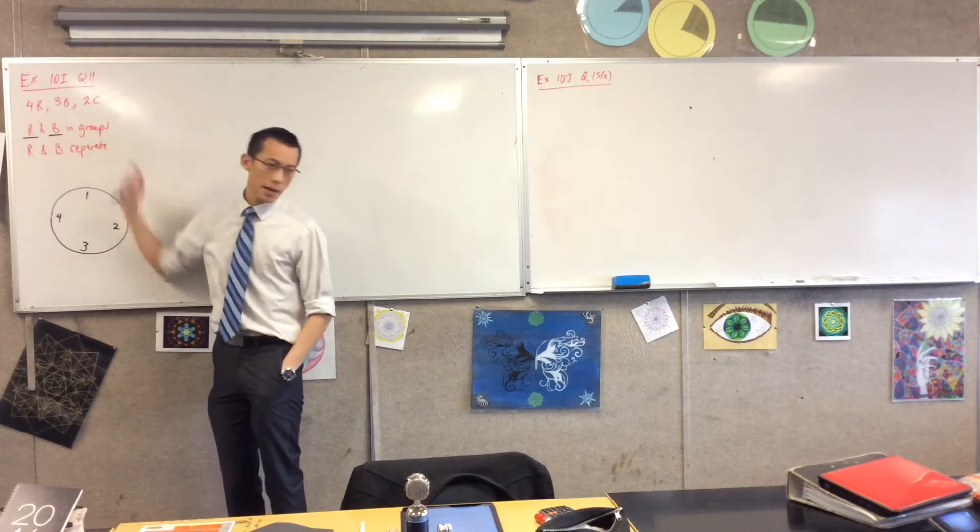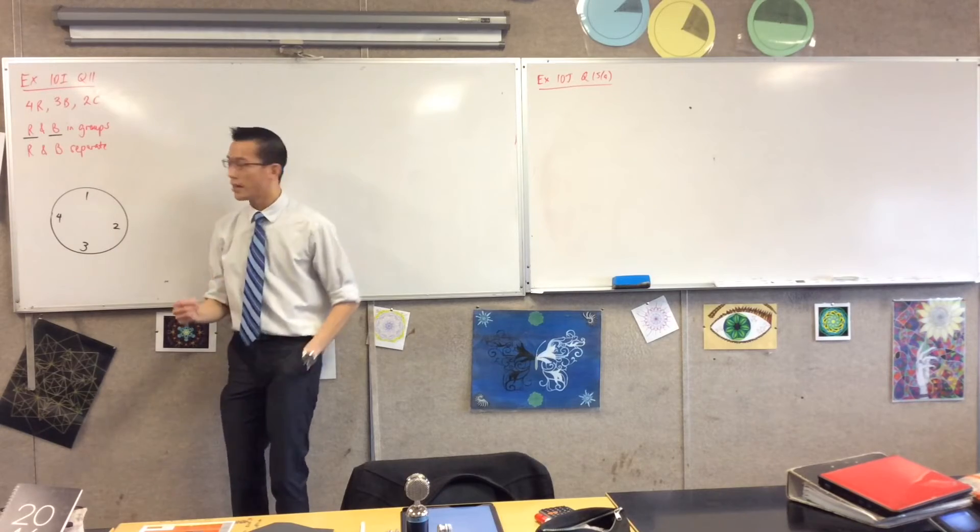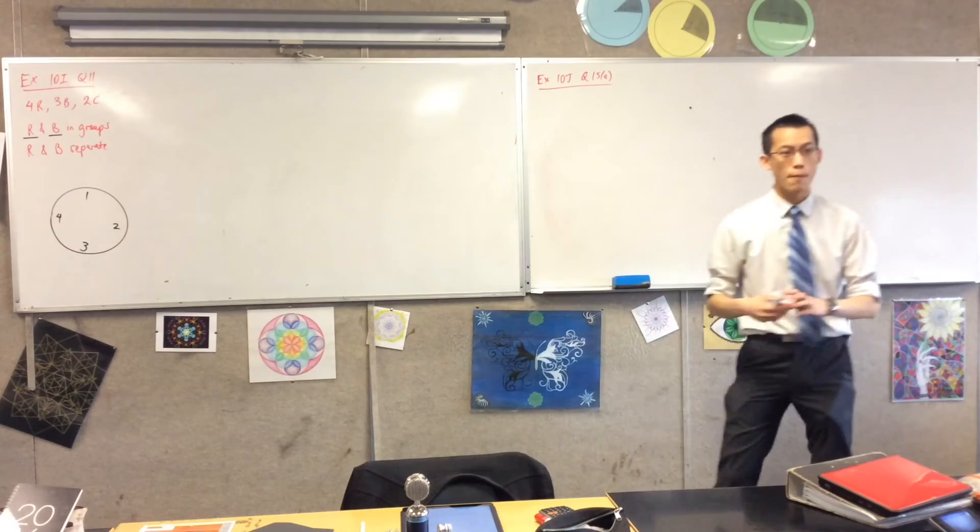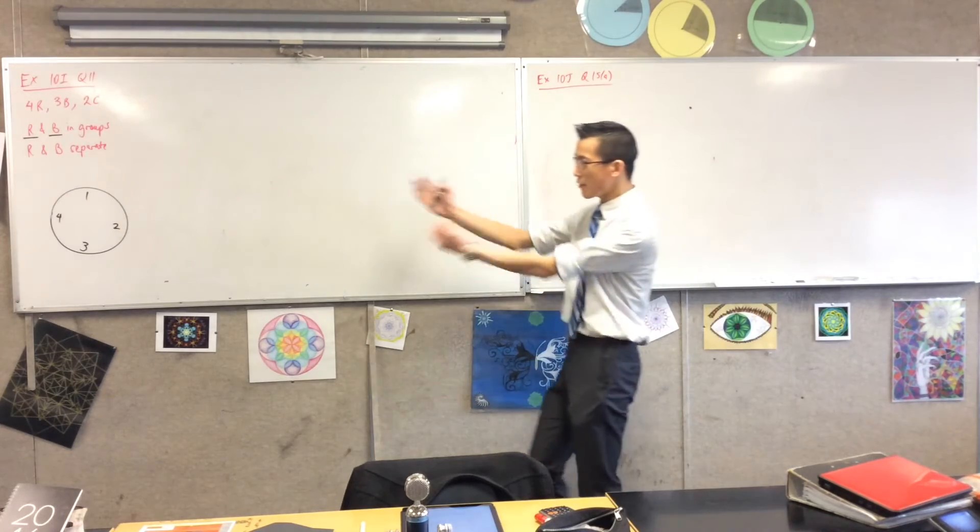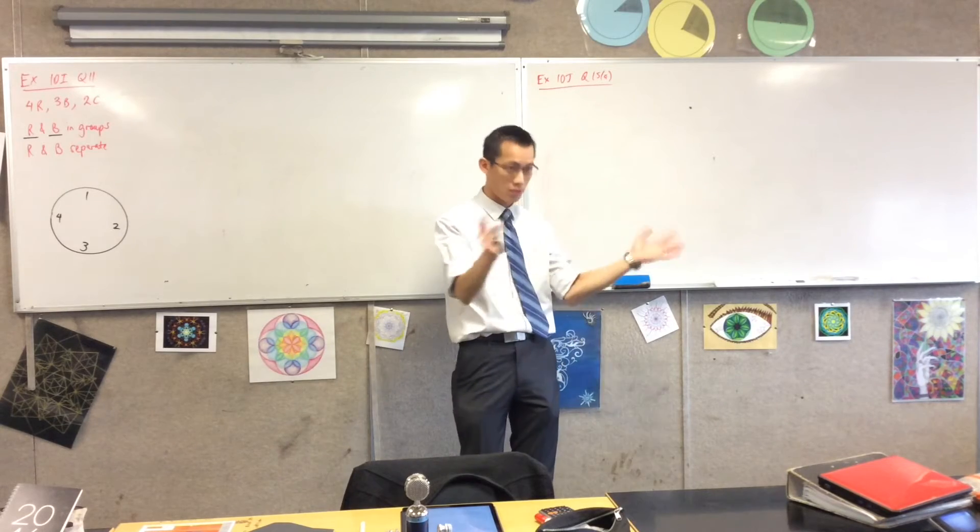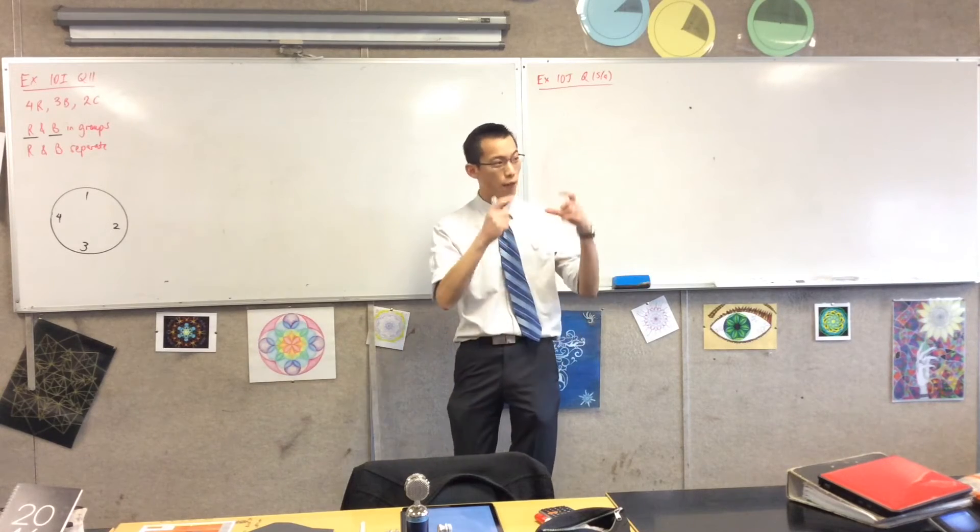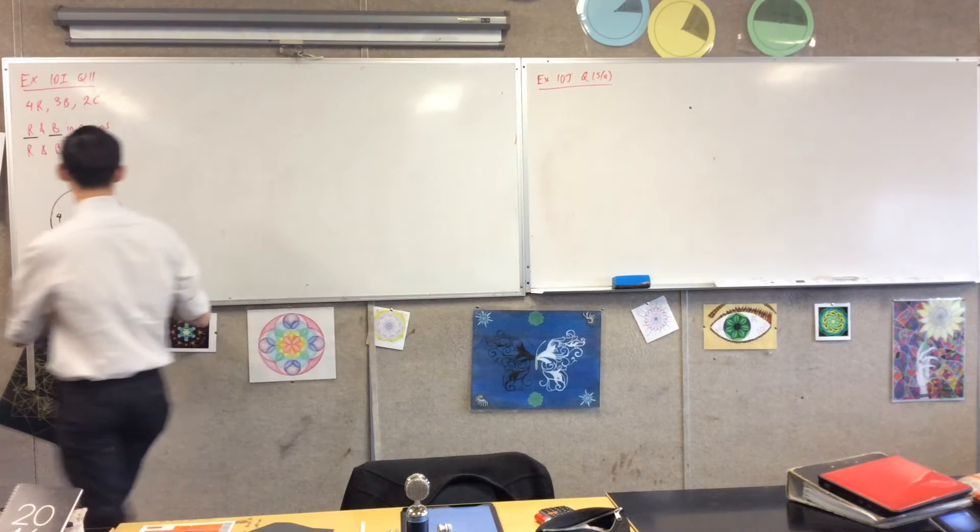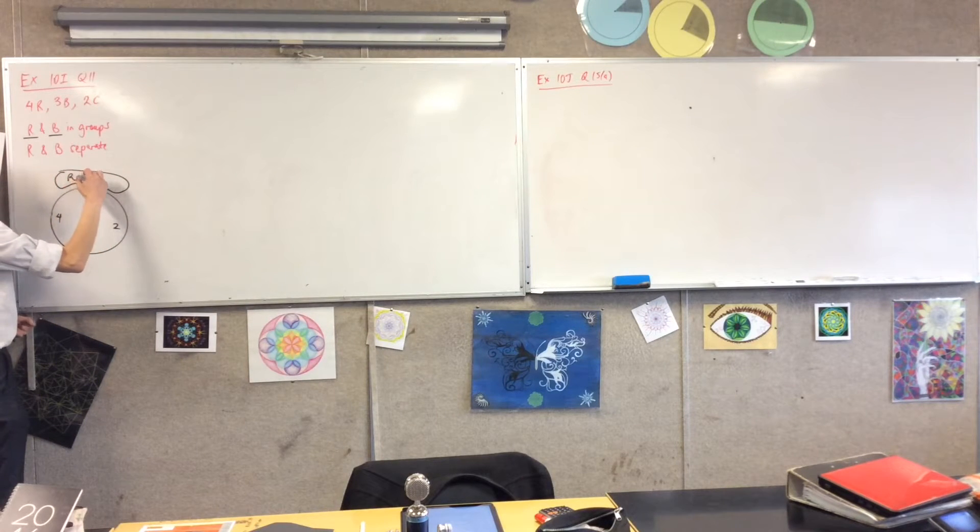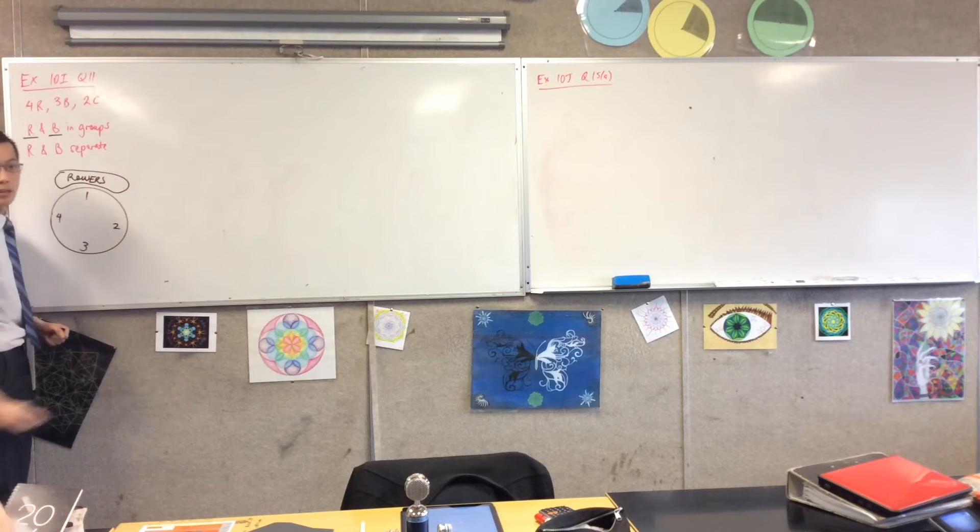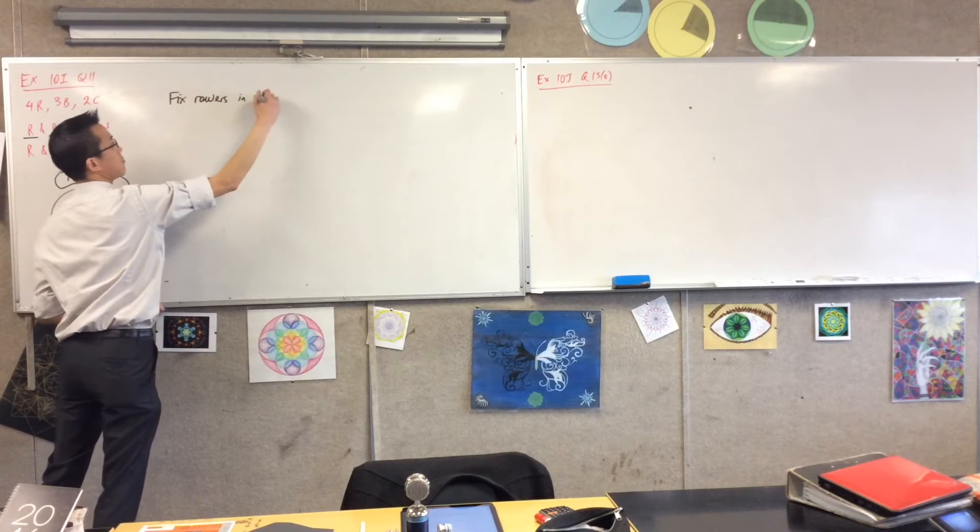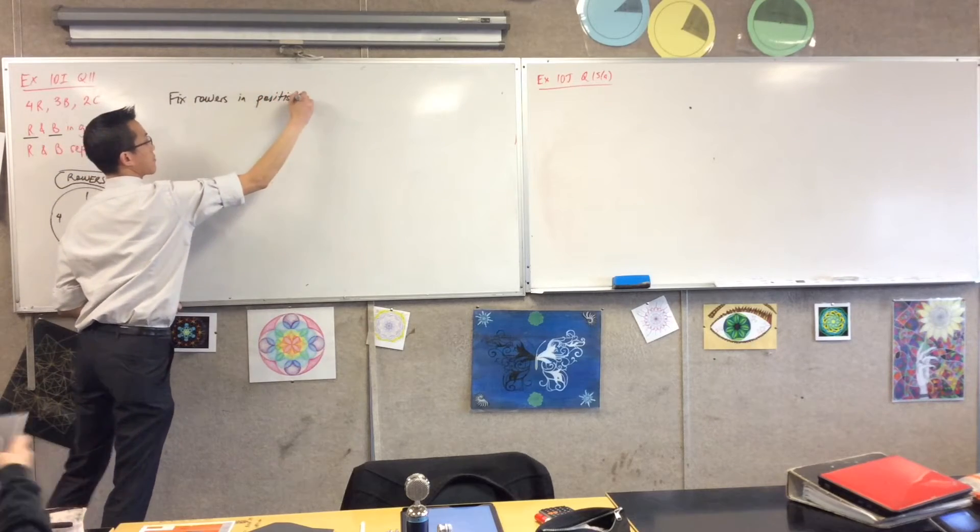So the first thing I'm going to do is draw myself a circular table and there are going to be one, two, three, four positions around the table. Now remember, it's around a circular table, so at the moment, let's imagine the group of rowers, they're walking up and everything looks the same. That group can sit in any of those spots and it's all identical. So let's fix the rowers in a position. I'm going to fix them up here. So I'm actually going to write, fix the rowers in position.